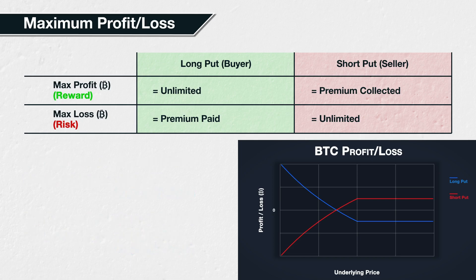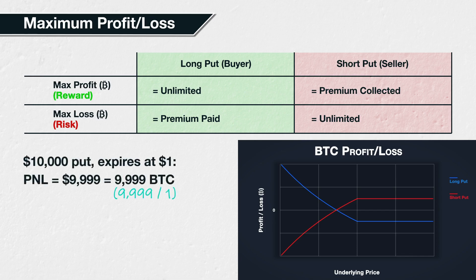Taking this to an extreme, imagine the price of Bitcoin falls all the way to $1 per Bitcoin. What is this same $10,000 put option now worth? The put option is clearly worth $9,999, because the price of Bitcoin is now $1, but we have the right to sell it for $10,000, which is $9,999 higher. As the price of Bitcoin is now $1, this $9,999 is paid as $9,999 Bitcoin.